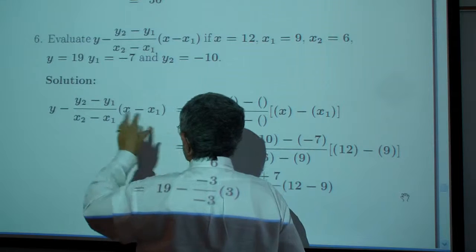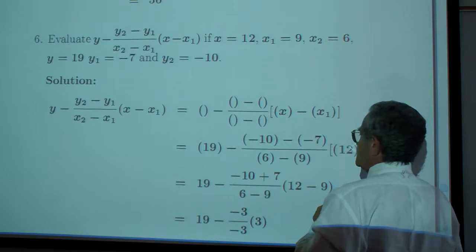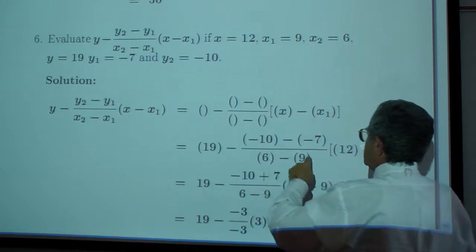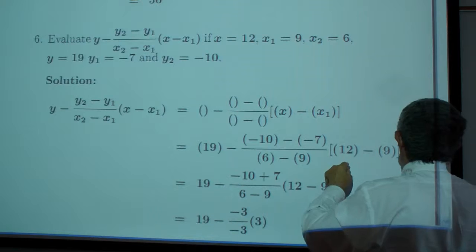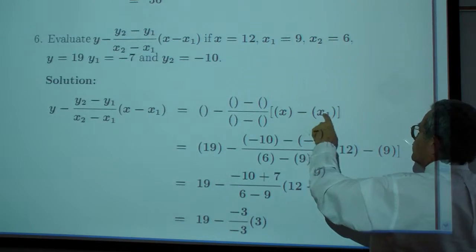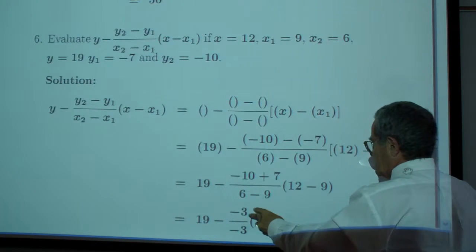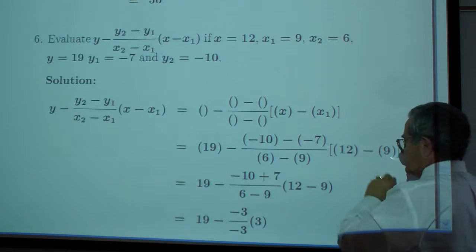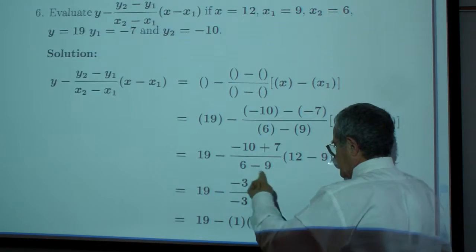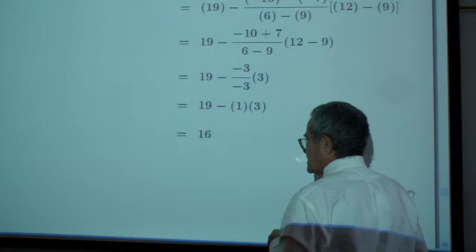Exercise 6: Evaluate y minus (y2 minus y1) over (x2 minus x1) times (x minus x1) if x equals 12, x1 equals 9, x2 equals 6, y equals 19, y1 equals negative 7, and y2 equals negative 10. Populating the values, this becomes negative 10 plus 7, or negative 3. This becomes 3, and the numbers work out nicely here. This just becomes 3, so 19 minus 3 equals 16.